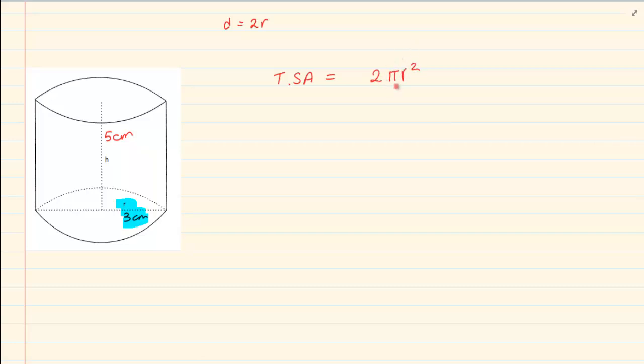Because remember one circle is πr² and there are two of them. Plus it is going to be 2πrh. Remembering that it is actually length times breath, but we are using the circle circumference to get the length. And the height of the cylinder is the breath.